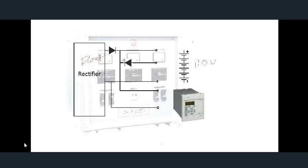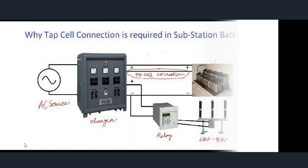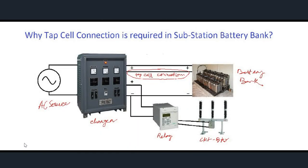With this contactor closed and with boost mode on, this contactor will open and the load will get voltage from a lower potential of the battery coming through the tap cell to the load. Hence it is clear that the tap cell connection in batteries is done to protect the DC loads — that is, relays, circuit breakers, and any other DC circuit coils — from overvoltages when the battery charger goes to boost mode. Friends, if you like the video please like, share, and comment, and don't forget to subscribe to the channel.